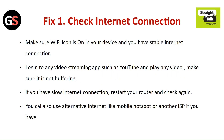Fix 1: Check internet connection. Make sure the Wi-Fi icon is on in your device and you have a stable internet connection. Login to any video streaming app such as YouTube and play any video — make sure it is not buffering. If you have a slow internet connection, restart your router and check again. You can also use an alternative internet source like mobile hotspot or another ISP if you have one.